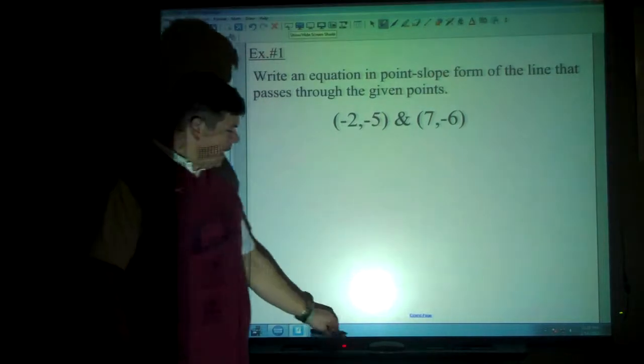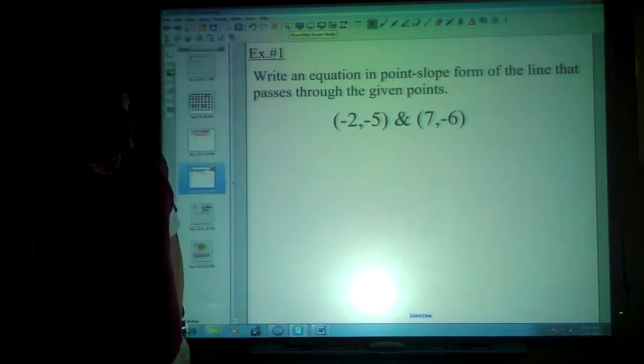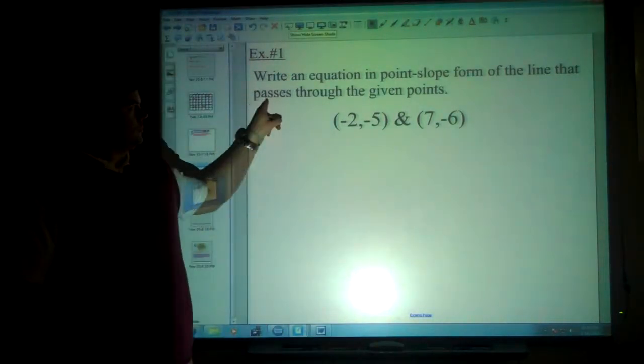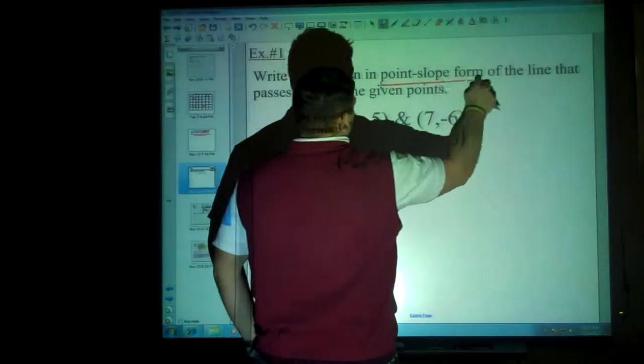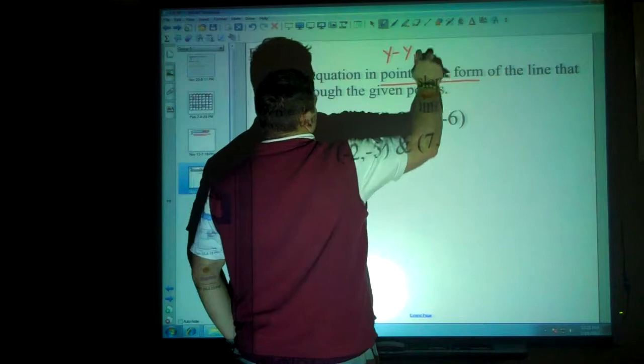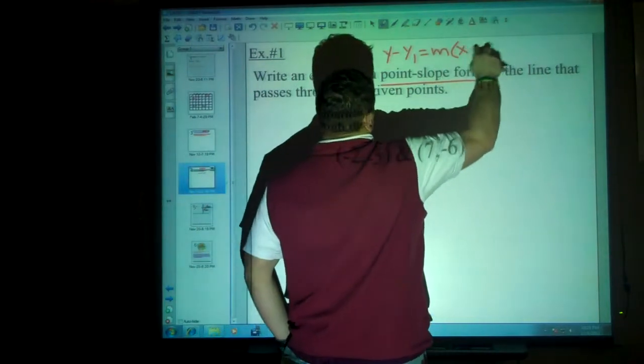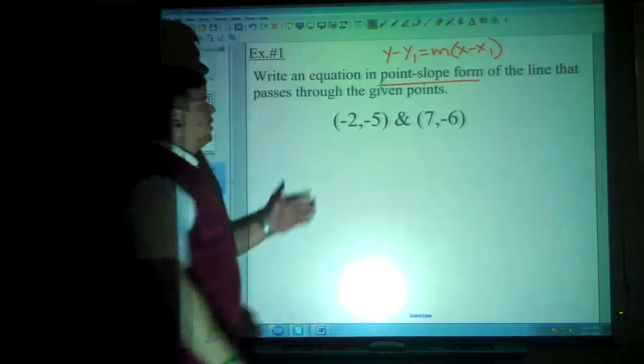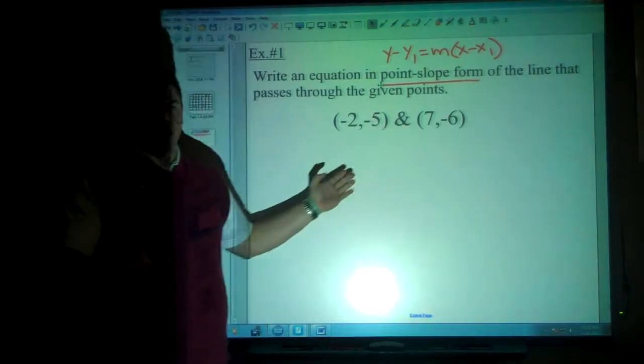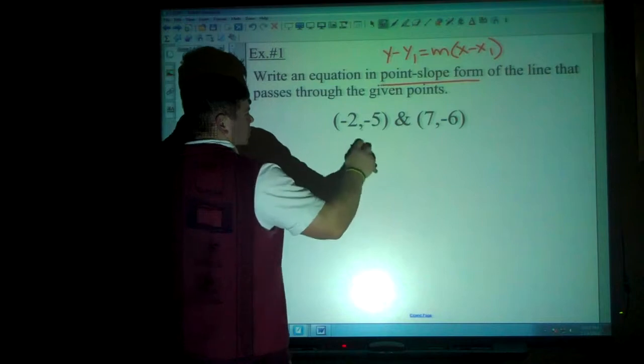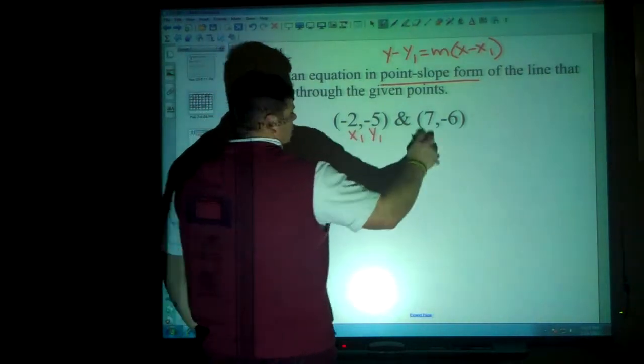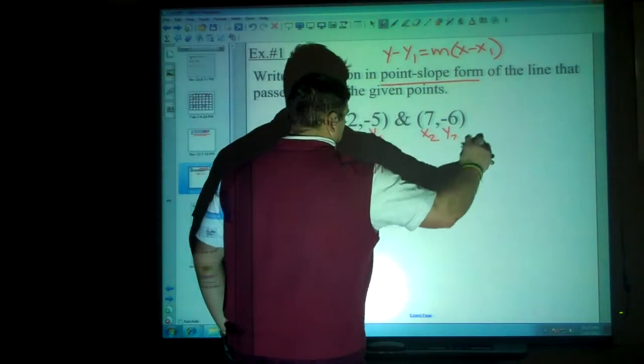So, our first example, write an equation in point slope form that passes through the given points. So point slope form, y minus y sub 1 is equal to the slope times x minus x sub 1. Except we don't know the slope. The past examples that we've gone over, they always gave us the slope. That's okay because we're becoming pretty good veterans using our slope formula.